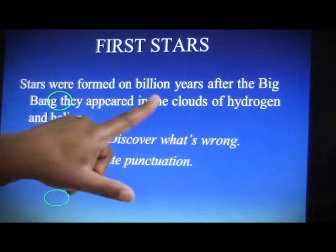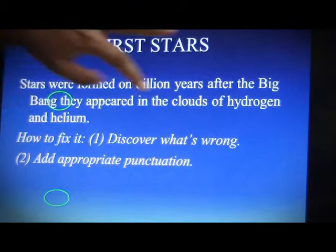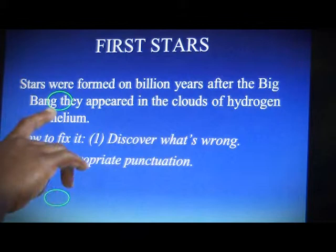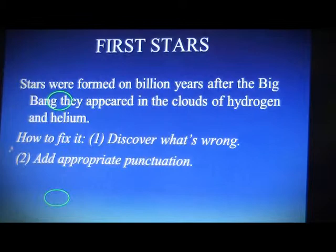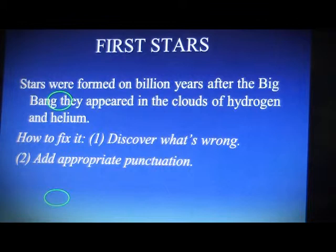Stars formed billions of years after the Big Bang — that's one independent clause. They appeared in clouds of hydrogen and helium. There needs to be something here to fix this. In order to do it, you have to have a two-step process: discover what's wrong — apparently there are two independent clauses — and then add the appropriate punctuation: semicolon, conjunction, or conjunctive adverb.